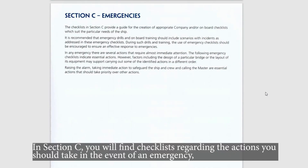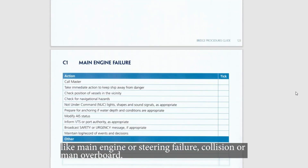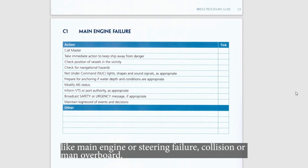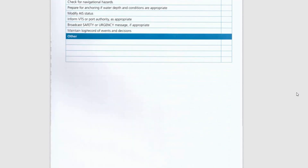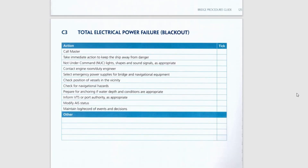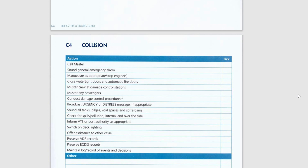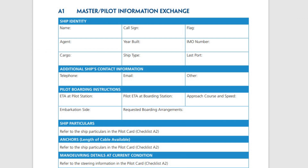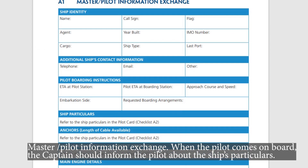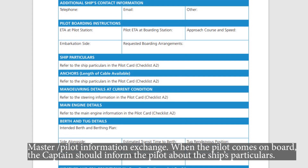In section C you will find checklists regarding the actions you should take in the event of an emergency, like main engine or steering failure, collision, or man overboard. So today let's take a closer look at the checklist from section A concerning pilotage master-pilot information exchange.